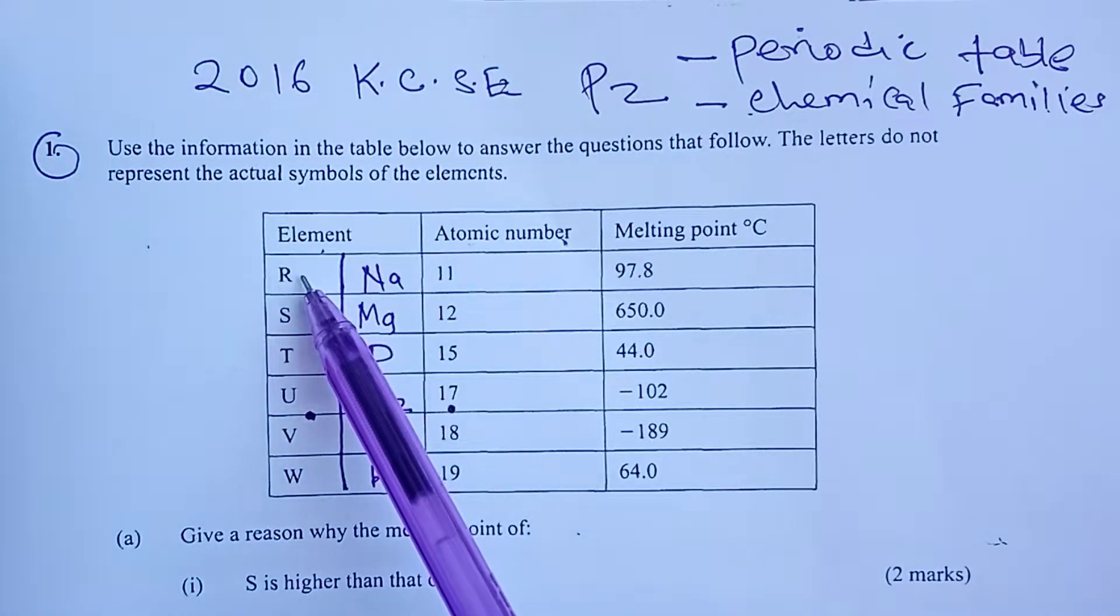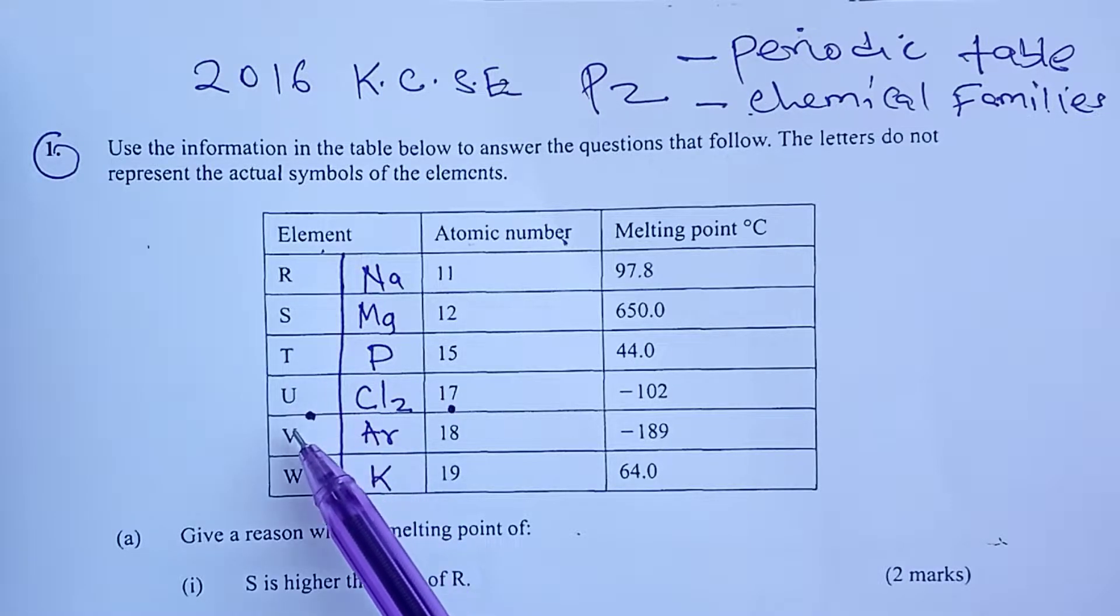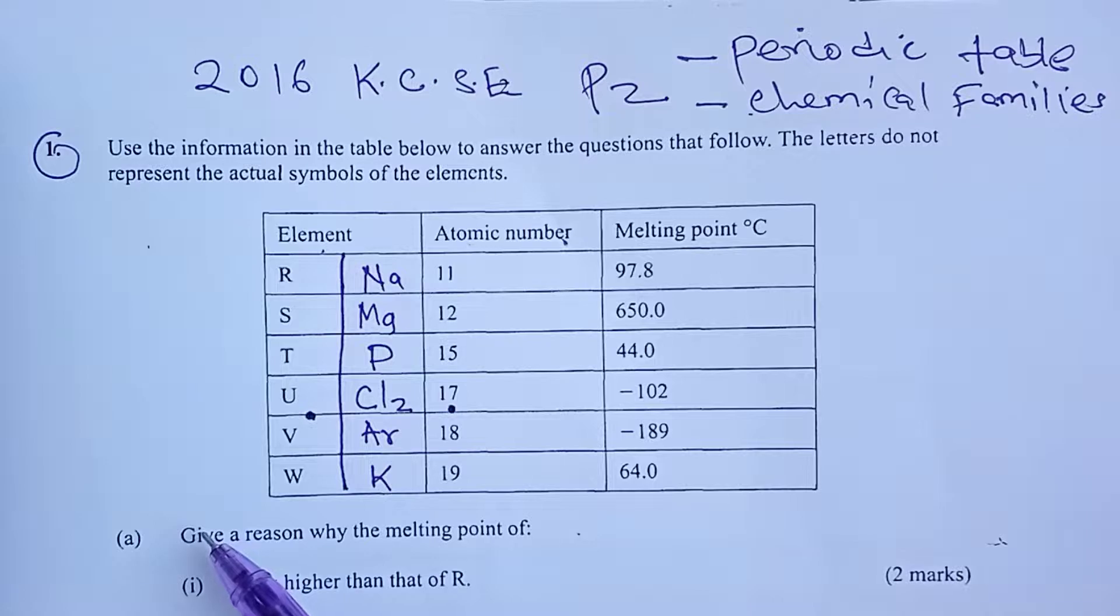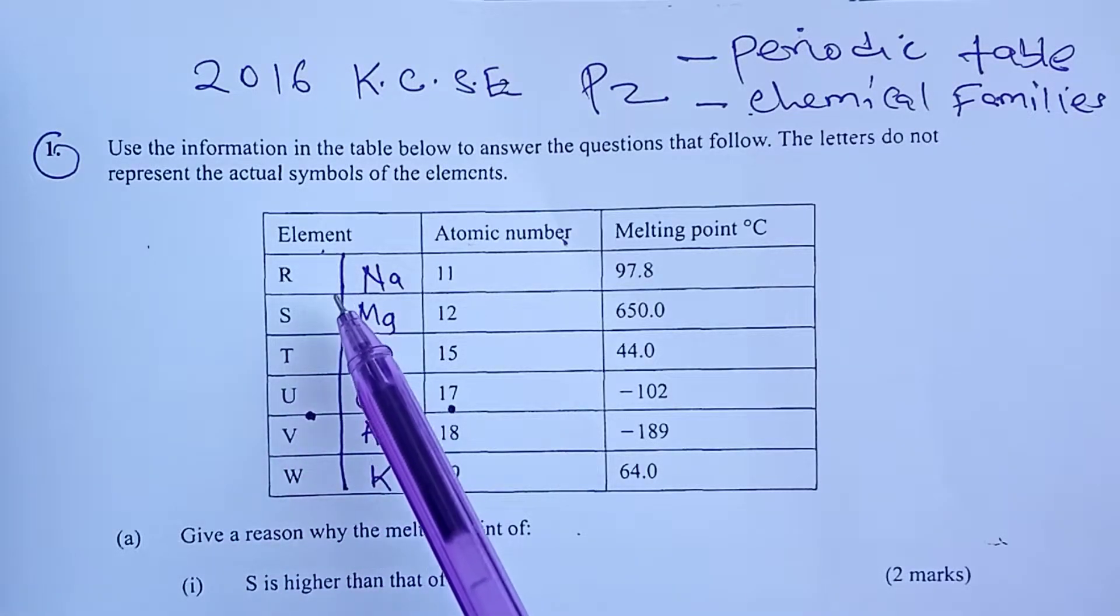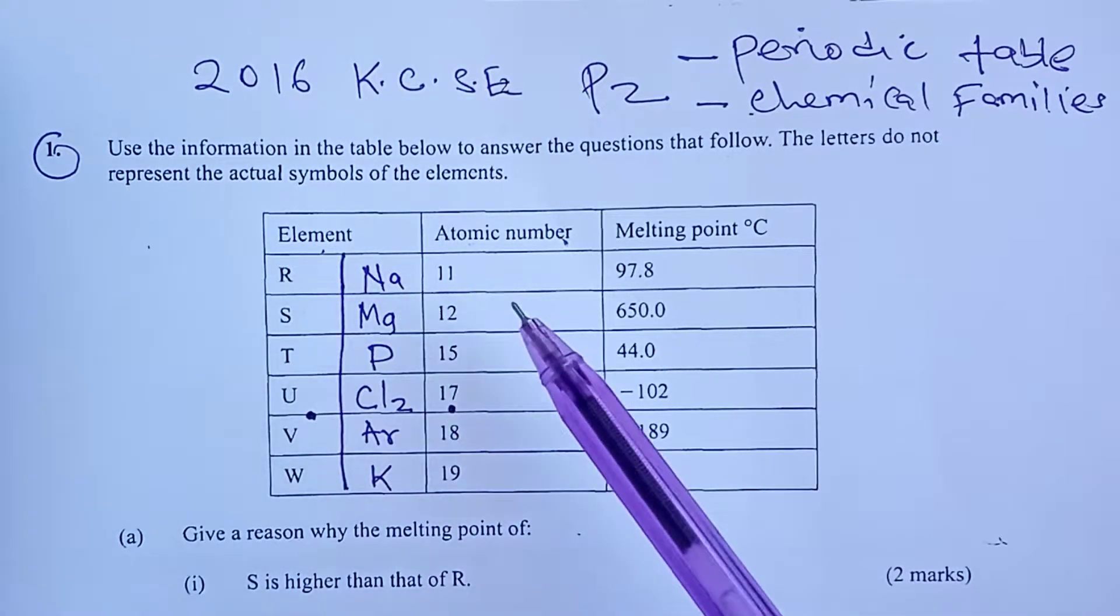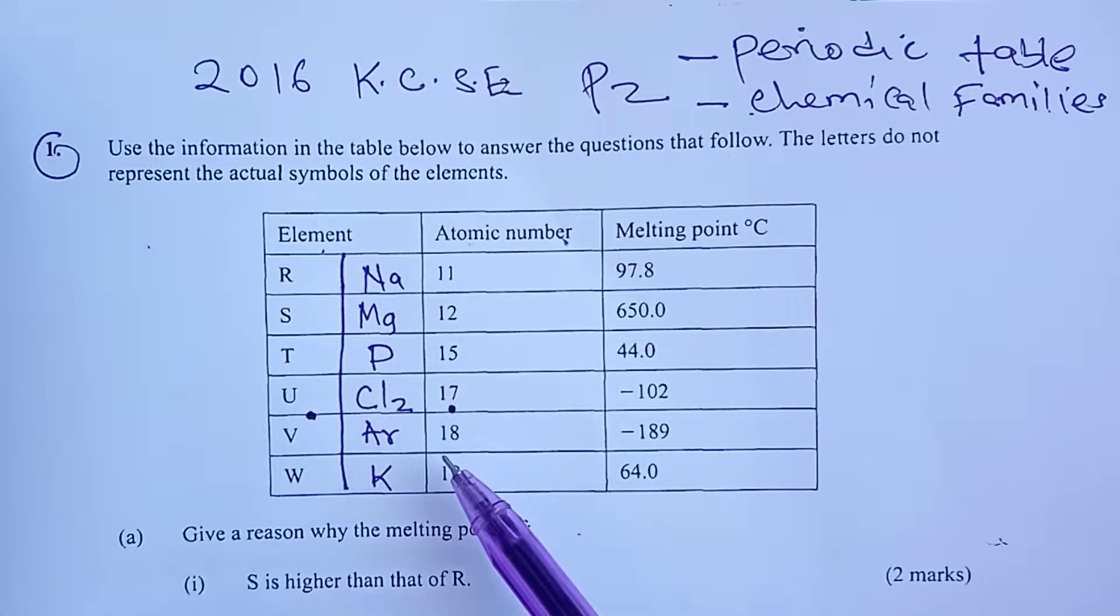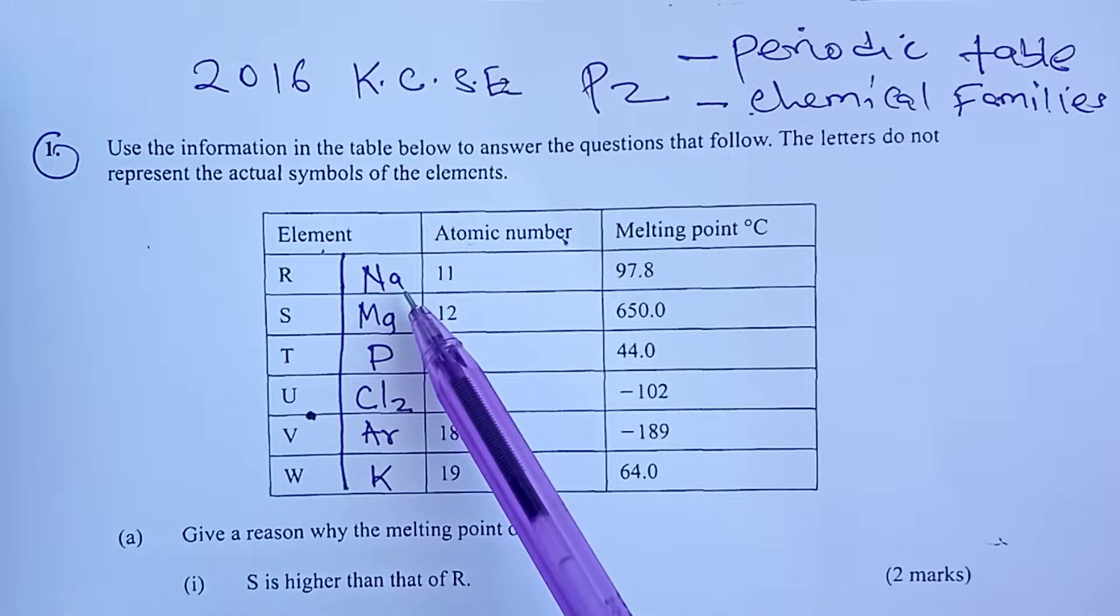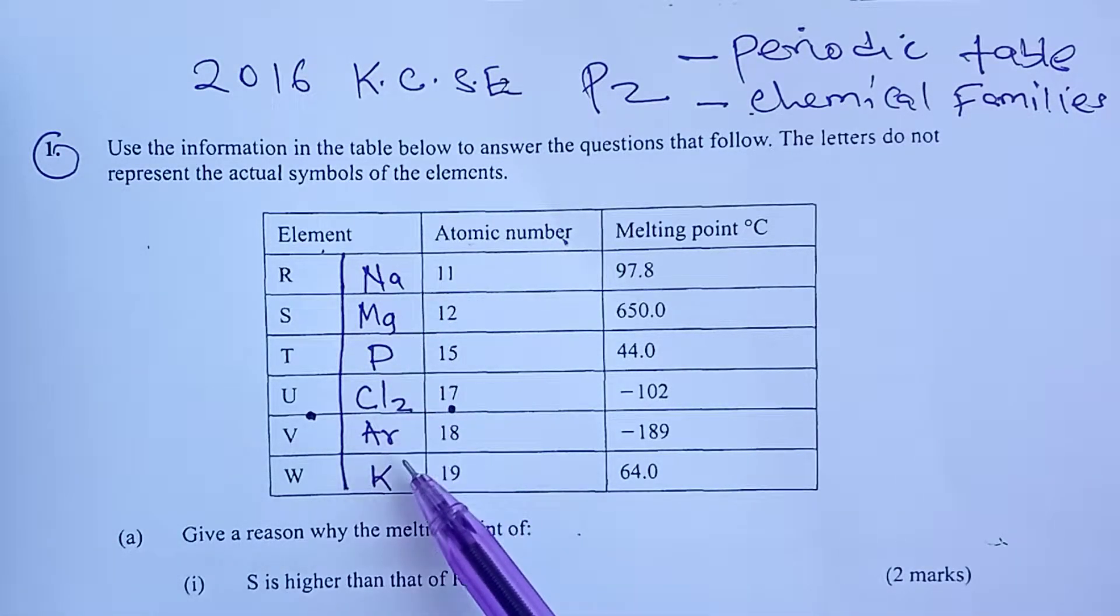The letters were R, A, T, U, V, and W. But we want to advise that if you are given letters to represent the elements, it is always good to use the atomic numbers given or the grid of the periodic table given to get the actual symbols of the elements being talked about. Why is this important?